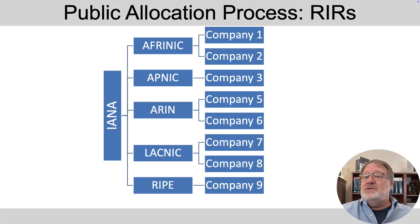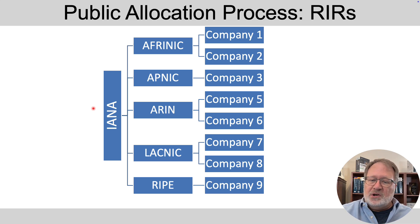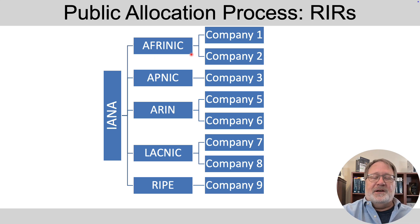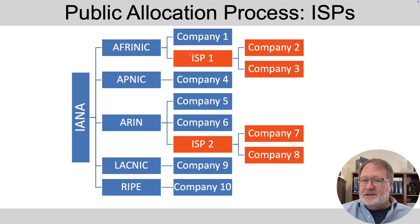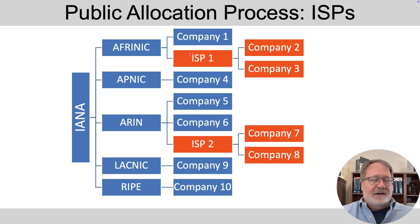To make sure everybody used unique address blocks, there was a registration and allocation process. IANA owns the address space, and they worked with five regional internet registries — RIRs — spread across the globe: Africa, Asia-Pacific, North America, and so on. A company would apply for an allocation and receive those addresses directly from the RIR. Over time, ISPs got into the game, getting an allocation from an RIR and then allocating those addresses out to their customers. So you might get your address block from your RIR or from your internet service provider.